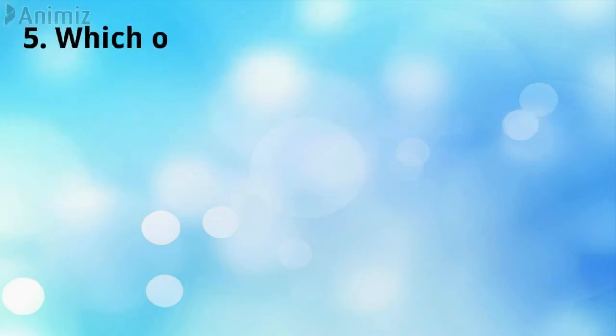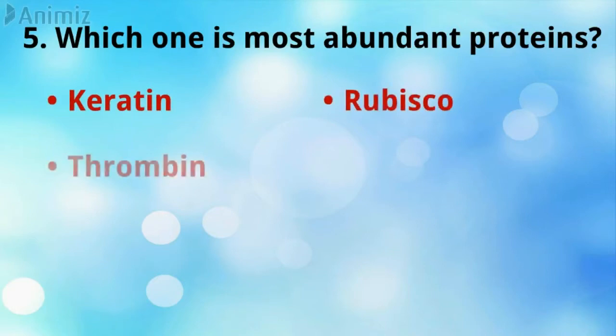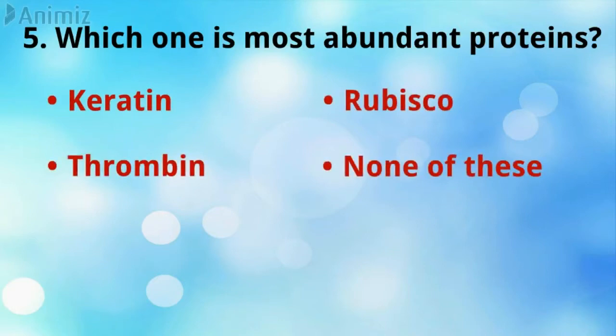Which one is the most abundant protein? Rubisco is the correct answer.